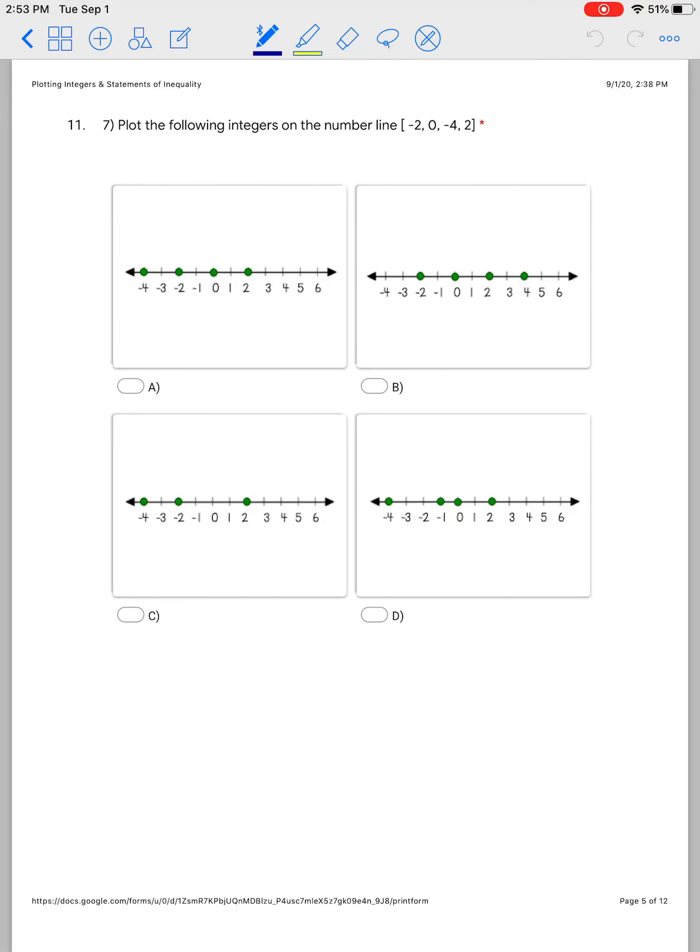Now number 7 and number 8 are just asking you to plot. So you're going to draw a number line. You're going to start with your 0 in the middle and then you're going to plot all four of these. So for example...